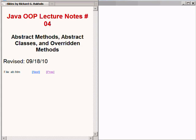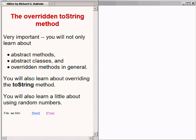Welcome to the beginning of lecture number four titled Abstract Methods, Abstract Classes, and Overridden Methods. In this lecture, you will not only learn about abstract methods, abstract classes, and overridden methods in general, you will also learn about overriding the method named toString. You will also learn a little about using random numbers.